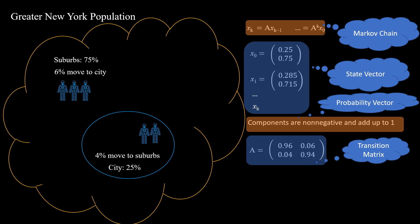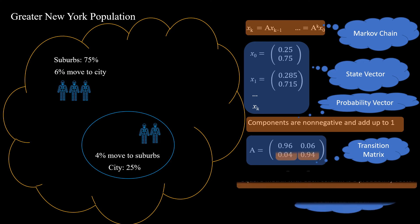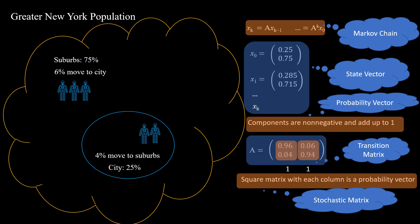The transition matrix tells us how the state at any time k determines the state at time k plus 1. There is another name for A. Note that each column of A is a probability vector as well. A square matrix with this property is called a stochastic matrix.